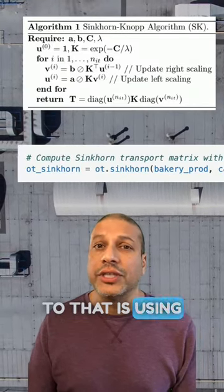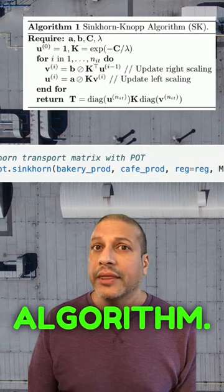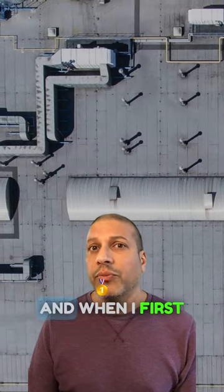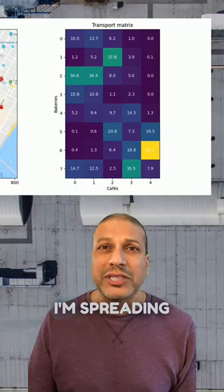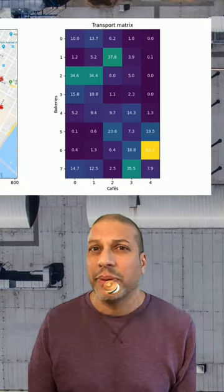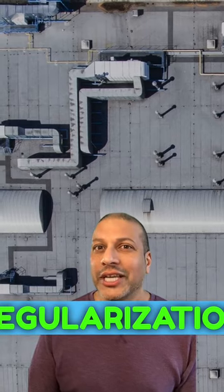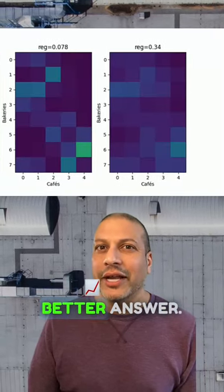An alternative to that is using the Sinkhorn algorithm. This has a lower complexity, and when I first run it here, you can see the first run is a little bit messy where I'm spreading the croissants across multiple bakeries and cafes, but we can use regularization to make this a better answer.